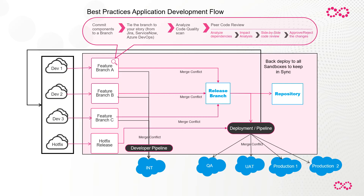It will allow you to do best-practices static code analysis using Apex PMD, Checkmarx, SonarQube, CodeScan, or whatever your favorite package is. We also have peer-to-peer code reviews, where you can very easily set up a review and approval on all of your code — not only your code, but also your declarative changes — so you can have a sign-off proving it was reviewed before it went into production.